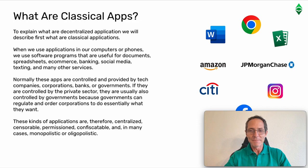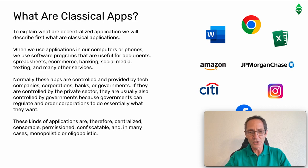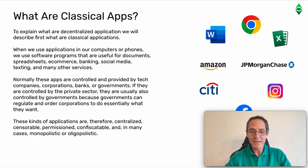To explain what decentralized applications are, we will first describe what classical applications are. When we use applications on our computers or phones, we use software programs that are useful for documents, spreadsheets, e-commerce, banking, social media, texting, and many other services. Normally these apps are controlled and provided by tech companies, corporations, banks, or governments. If they are controlled by the private sector, they are usually also controlled by governments because governments can regulate and order corporations to do essentially what they want.